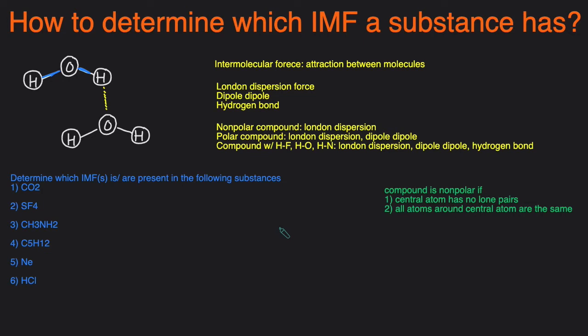So we'll start once again with the Lewis structure. And the Lewis structure for SF4 looks as such. Then we need to determine whether this molecule is polar or nonpolar. So we use the checklist. We see if the central atom has any lone pairs. And S does have a lone pair on the central atom. So since it doesn't meet this first criteria, then this compound is going to be polar. And since it's polar, it will have London dispersion forces and dipole-dipole. It doesn't have hydrogen bonding because we don't see any HF, HO, or HN in this compound.